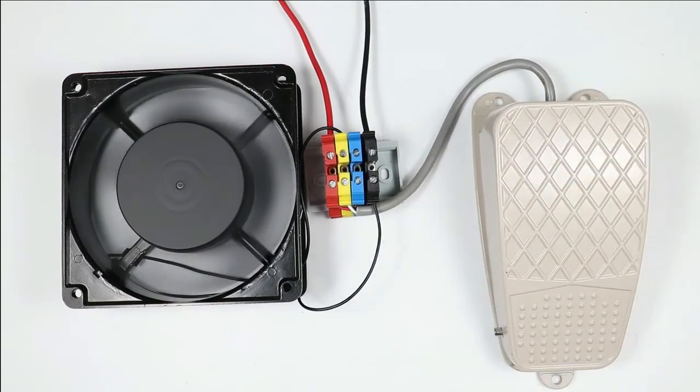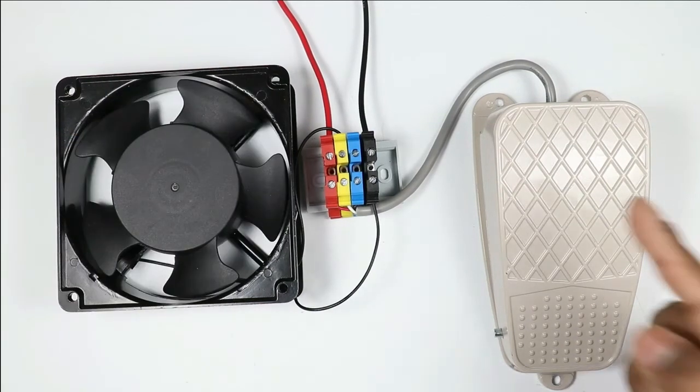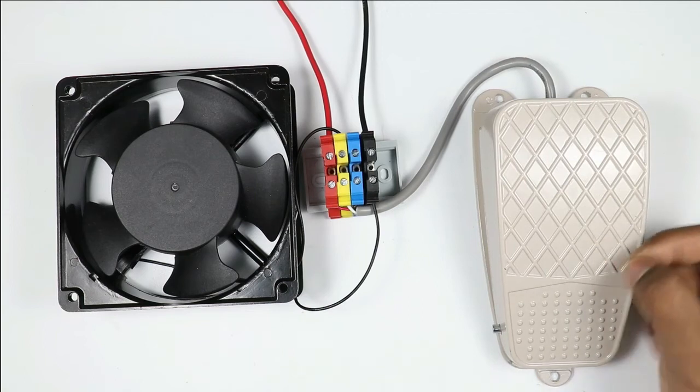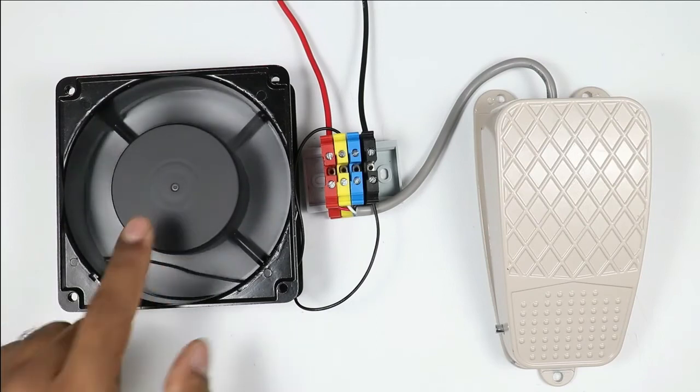On releasing the switch, the motor will be turned off. We have to understand only this much: inside the foot switch, there is a limit switch. When we operate that limit switch, the motor is turned on, and on releasing the switch, the motor is turned off.